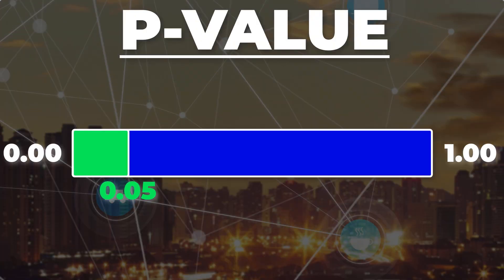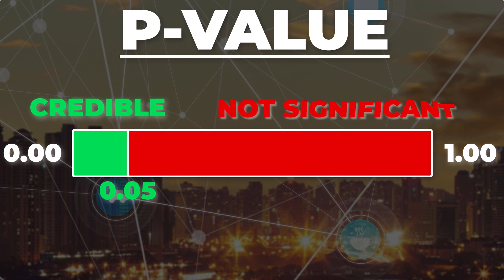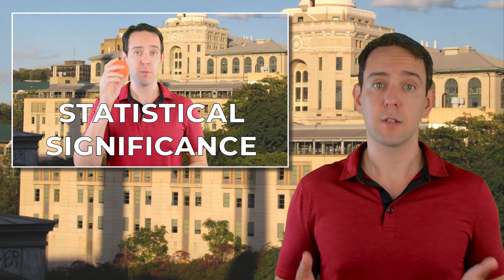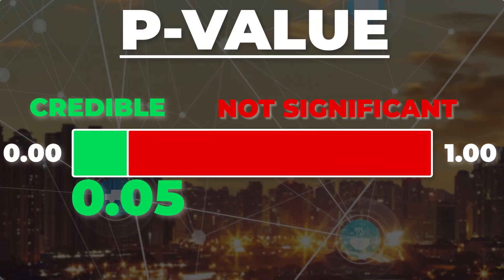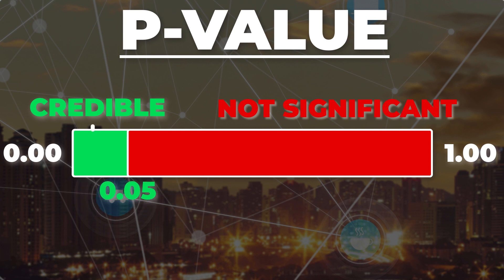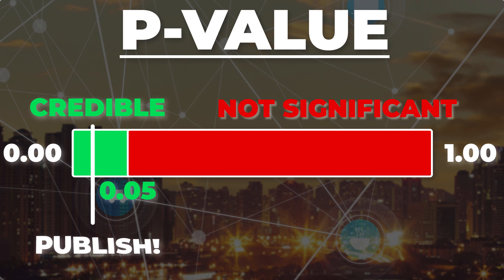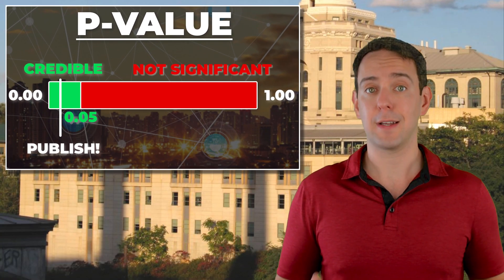Before we get into the specific ways in which p-hacking occurs, we need a quick primer on what p-hacking is and why it's so problematic. In short, many academic disciplines have decided, mostly arbitrarily, that if a result has a p-value below 0.05, that is considered scientifically credible. Anything with a p-value above 0.05 is considered not as having enough evidence to meet standard levels of scientific confidence. I won't go too deeply into what statistical significance is, but I do have a different video covering that, which I'll link to below.